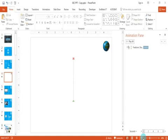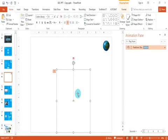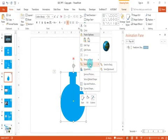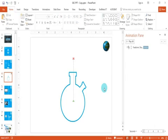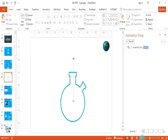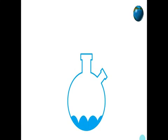Now we need to set up the layering correctly. Click on the first flask and send it to back. We now have three layers: the first layer is the blue-filled flask at the bottom, the second layer is the rectangular box on top of it, and the third layer is the outline-only flask at the very top. If you click the slideshow button you can see water filling up, but it's not yet moving with the wave effect.